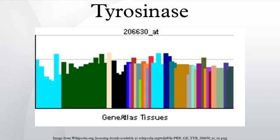In the food industry, tyrosinase inhibition is desired as tyrosinase catalyzes the oxidation of phenolic compounds found in fruits and vegetables into quinones, which give an undesirable taste and color and also decrease the availability of certain essential amino acids as well as the digestibility of the products. As such, highly effective tyrosinase inhibitors are also needed in agriculture and the food industry.